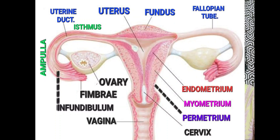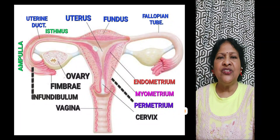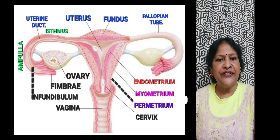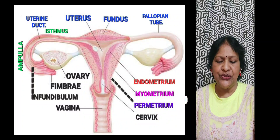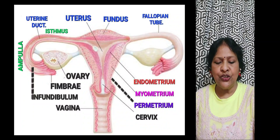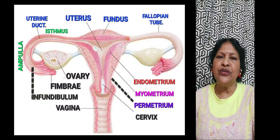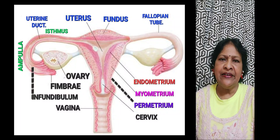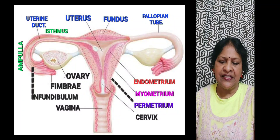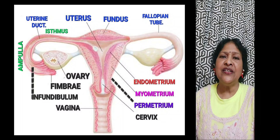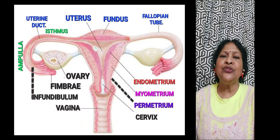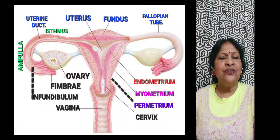If you look at the sides of the uterine wall, it is divided into three layers. The outermost protective layer is called the perimetrium, which is protective for the inner cells. Then we have the middle layer called the myometrium, which is muscular in its constitution. The innermost layer of the uterus is called the endometrium. This endometrium is divided into two parts: the one closer to the myometrium is called the basal layer, and the one facing the cavity of the uterus is called the functional layer. This functional layer becomes thicker during gestation, pregnancy, and also during the menstrual cycle.